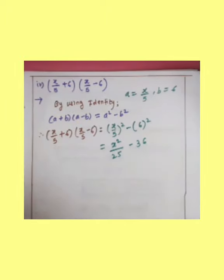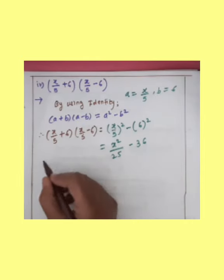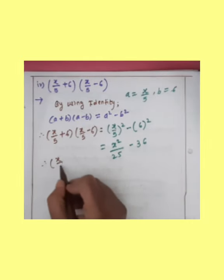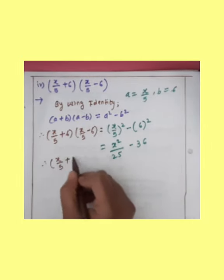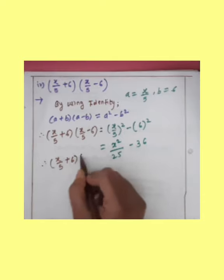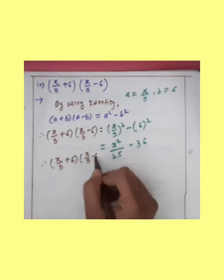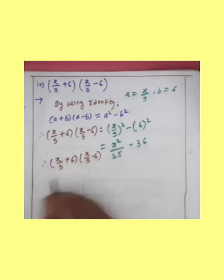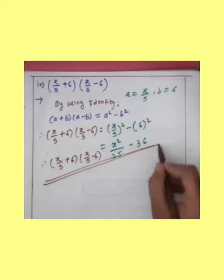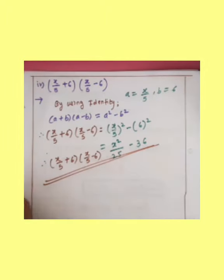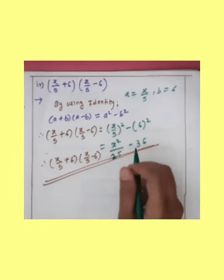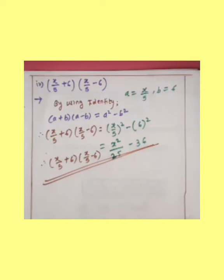So this is the final answer of this example. X upon 5 plus 6 into X upon 5 minus 6 is equal to X square upon 25 minus 36. Do you understand, student, how to solve this example?